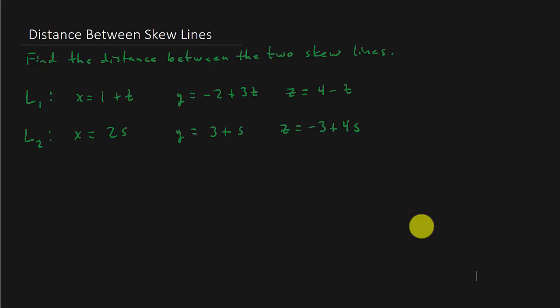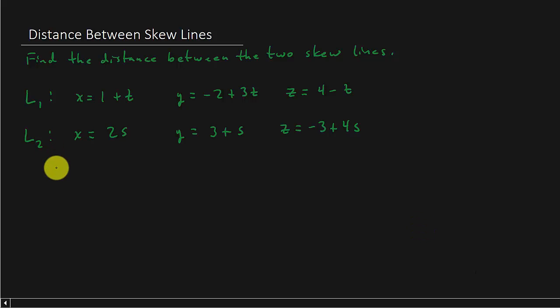Skew lines are lines that do not intersect and they're not parallel. So let's find the distance between line L1 and L2.